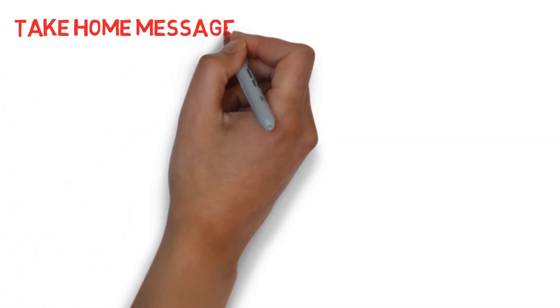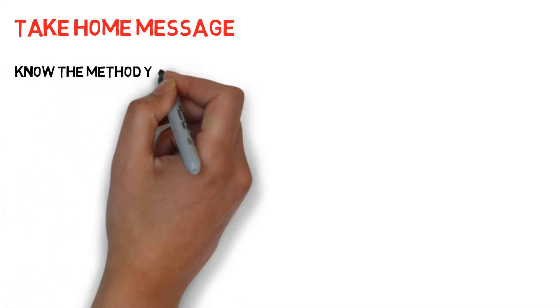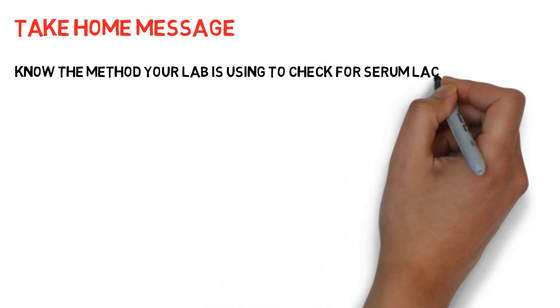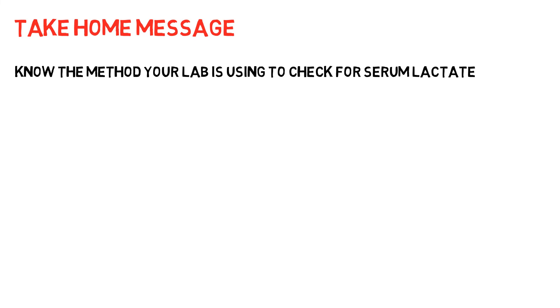So how can this help you in your ICU? Knowing the method your lab uses to check serum lactate can be very helpful, especially if your lab uses both methods — the lactate oxidase system and the lactate dehydrogenase system. Using both systems in the right clinical setting may help you identify patients who have a lactate gap who may potentially have ethylene glycol poisoning, as ethylene glycol and methanol levels may take longer to process and may not be useful in the acute setting.